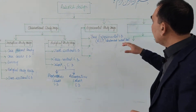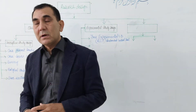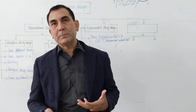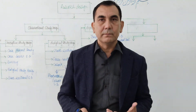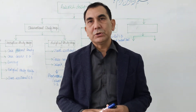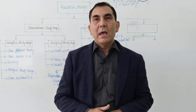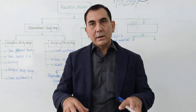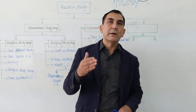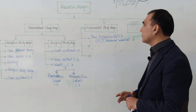In the true randomized control trial, the researcher conducts a study on a drug trial or experimental intervention. The researcher selects the population, selects a sample size from the population, and randomly allocates participants into the experimental group or the control group. That is why it is called the randomized control trial.